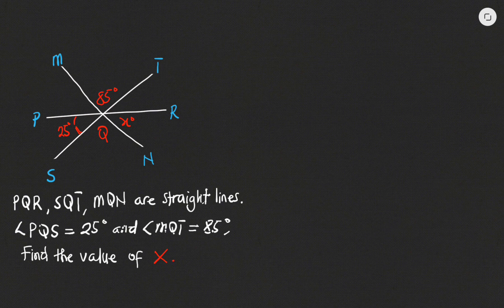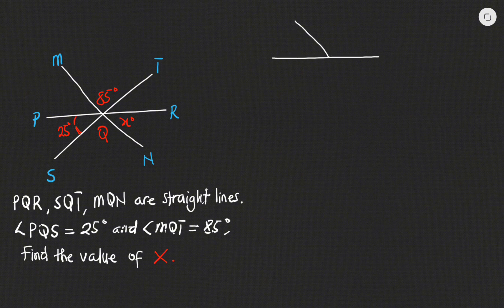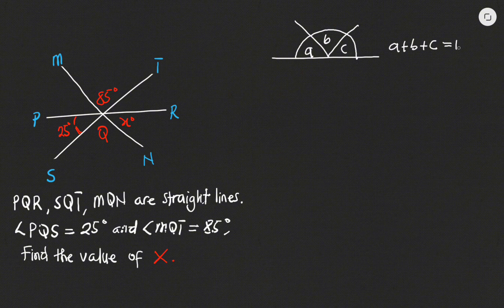We have to find the value of X, which is angle RQN. Now remember, all the lines here are straight lines. What we are going to use is the property of angles on a straight line — when we have different angles on a straight line, say A, B and C, the sum of all these angles equals 180 degrees.